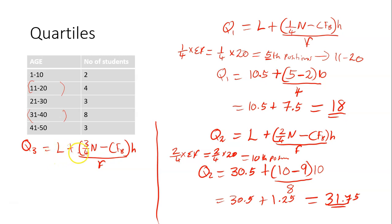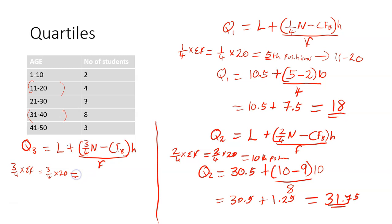We need to find the third quartile class before we can get the third quartile itself. To get the third quartile class, we say 3 over 4 times sigma F, which is 3 over 4 times 20. So 3 over 4 times 20 gives you the 15th position.